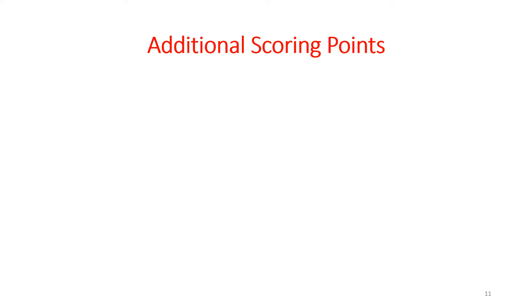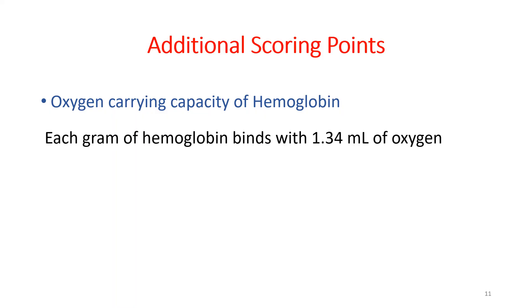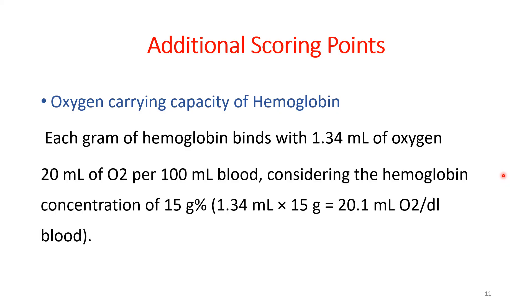You can also write some additional points like the oxygen carrying capacity of hemoglobin. One molecule of hemoglobin can bind to four molecules of oxygen. One gram of hemoglobin binds with 1.34 ml of oxygen. If the normal hemoglobin level is around 15 grams, then in 100 ml of blood there will be around 20 ml of oxygen — that is the oxygen carrying capacity. It is good to memorize these values as they are important for the exam.